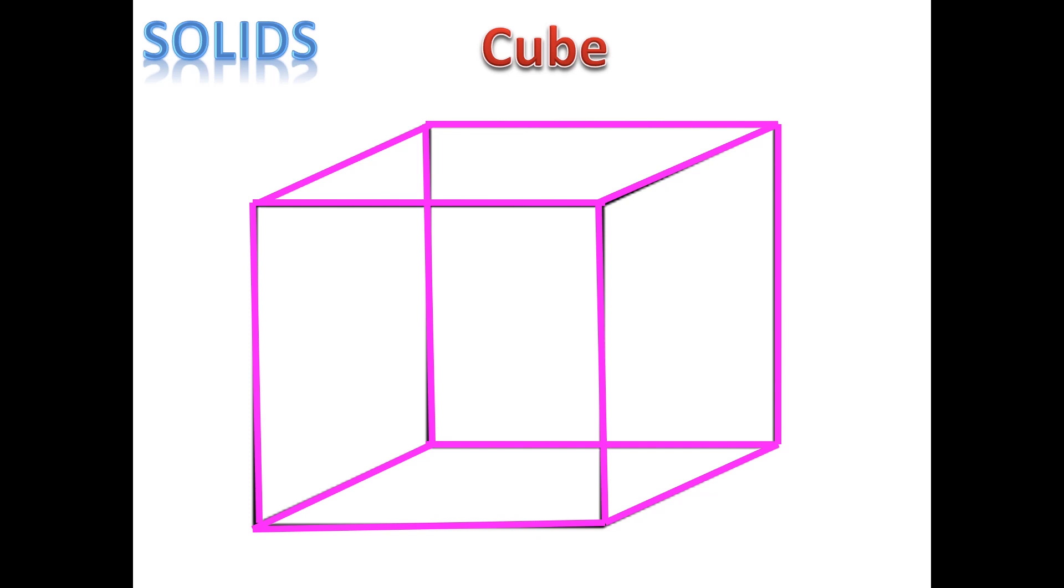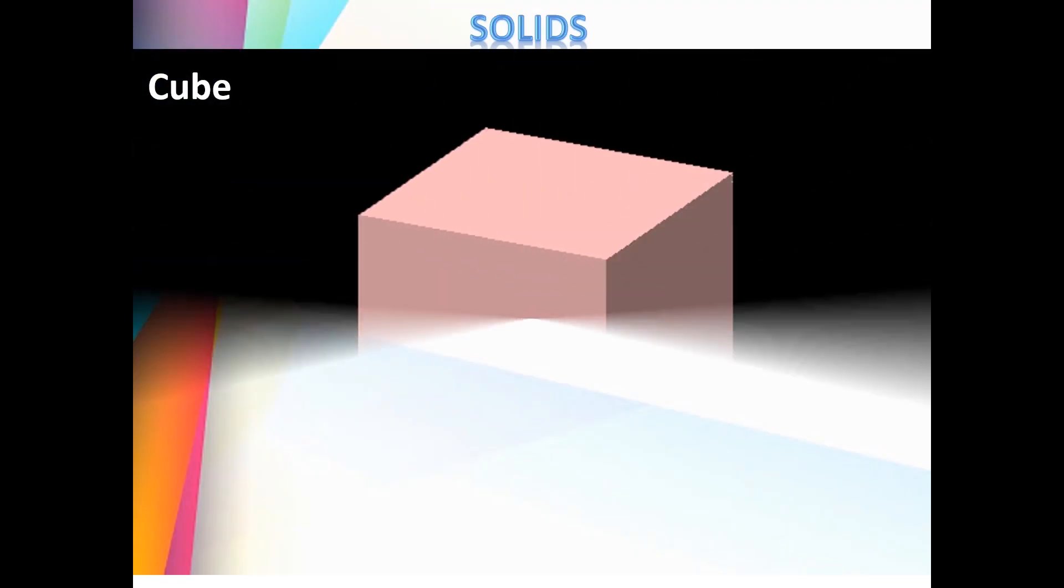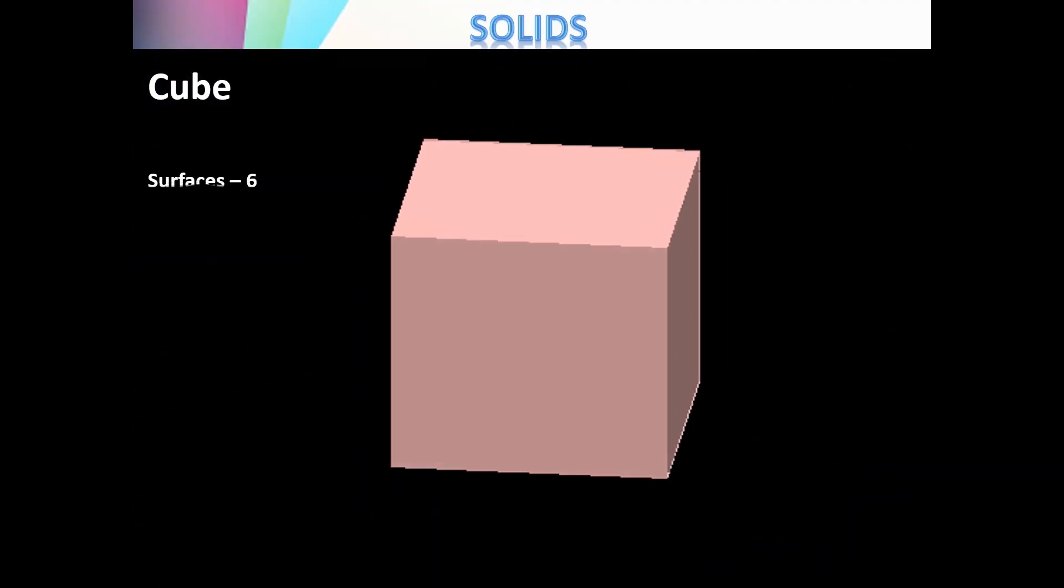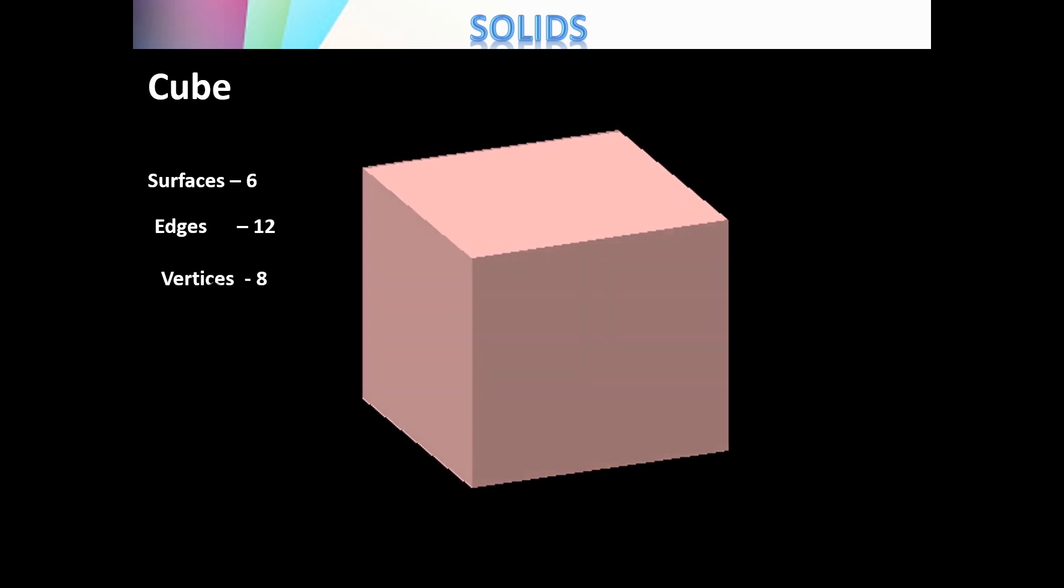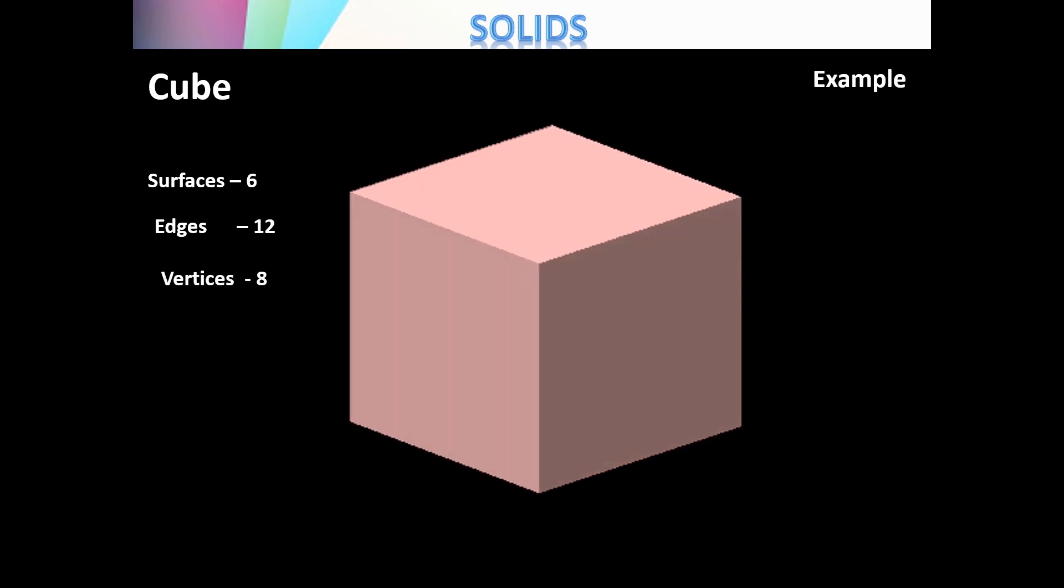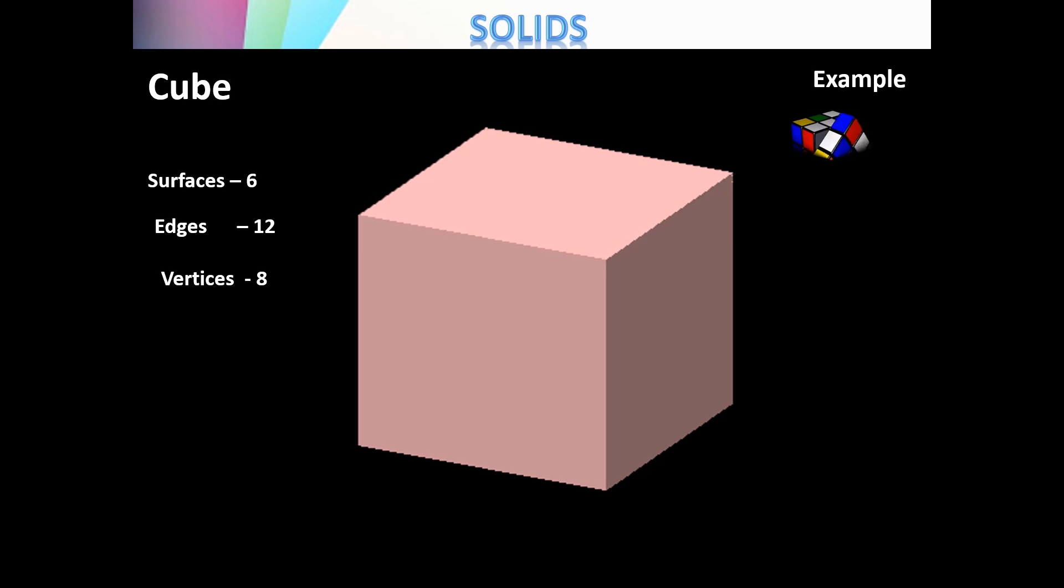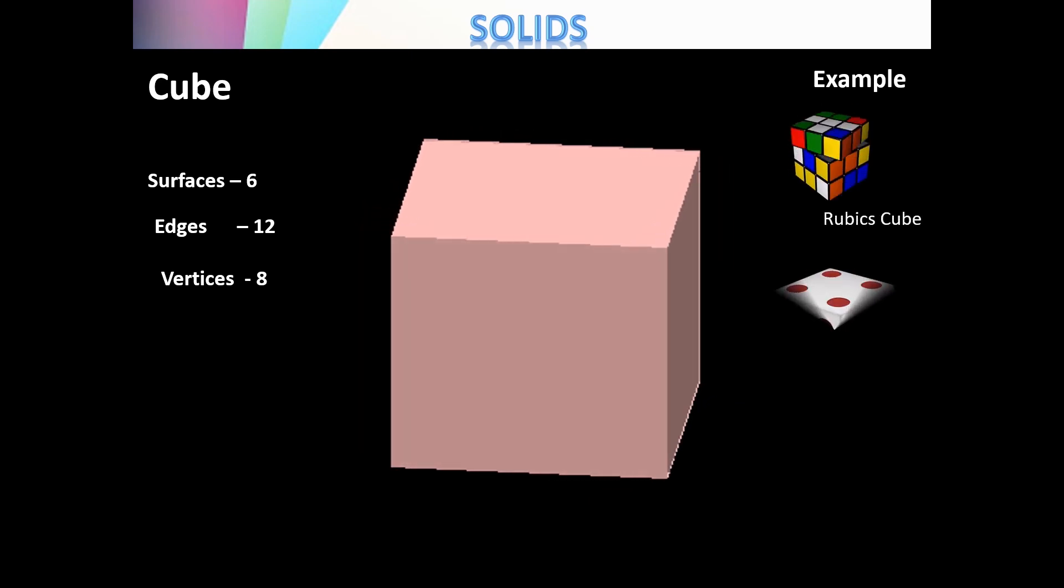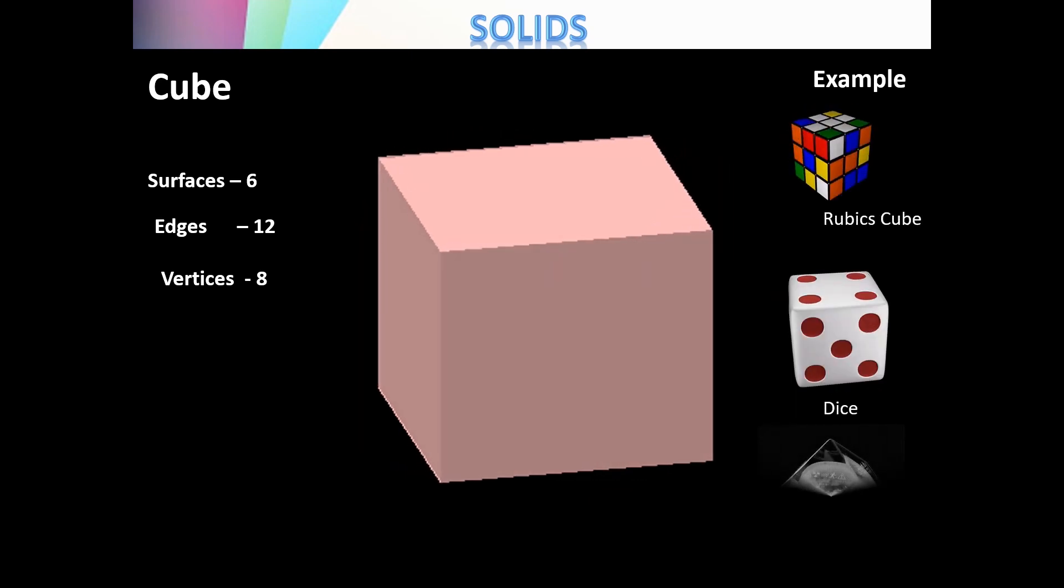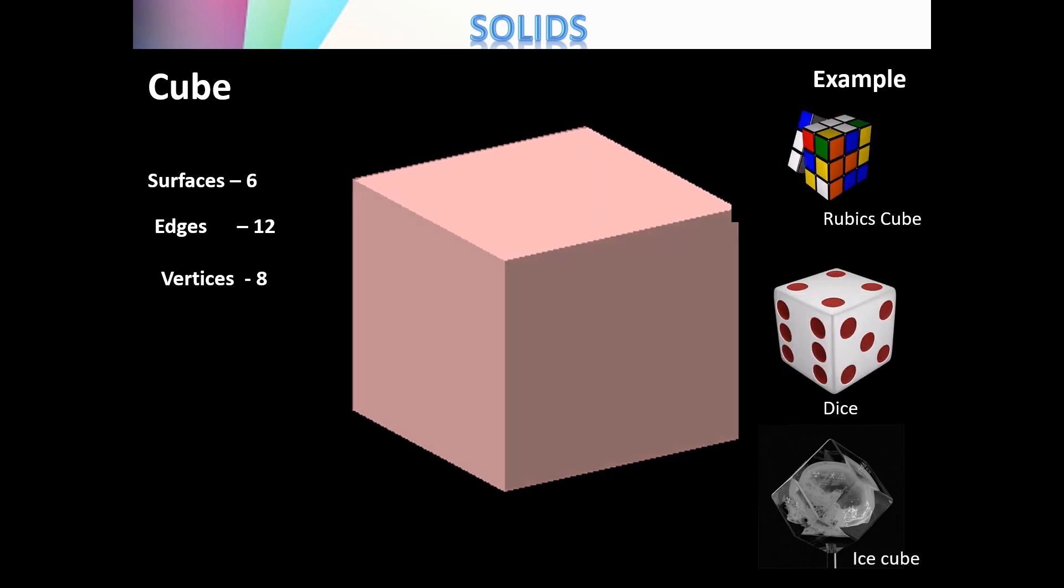An edge is formed where two surfaces meet. A cube has 6 surfaces, 12 edges, and 8 vertices. Let us see the examples: Rubik's cube, dice, and ice cube.